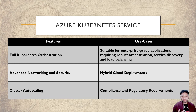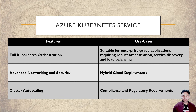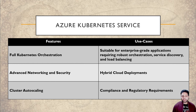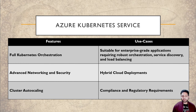Discussing the use cases: AKS is more suitable for enterprise-grade applications which need more complexity, so that service discovery and load balancing can all be taken care of. Because AKS works on Kubernetes, it provides a hybrid cloud deployment. If you have a cluster running on-premises or in any other cloud, you can integrate that cluster with Azure Kubernetes Service, and migration of pods from that cluster to AKS can be easily done.